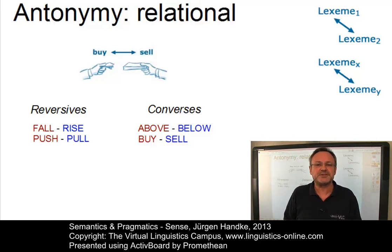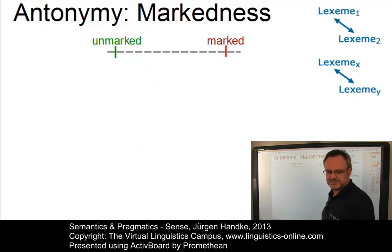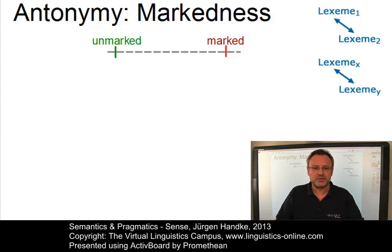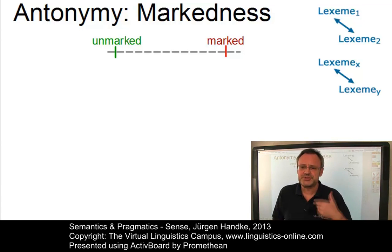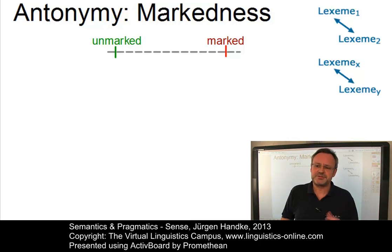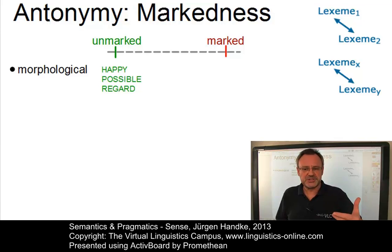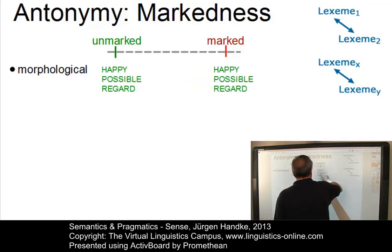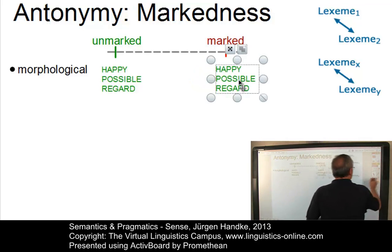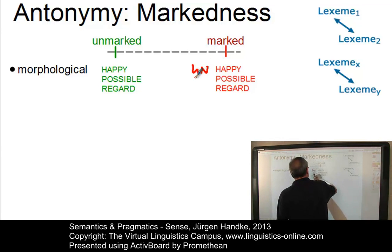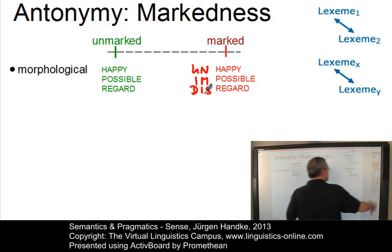An interesting concept related to antonymy is markedness. The members of antonym pairs are often distinguished with respect to their markedness, where one item — the marked term — is said to possess a special mark which the other, the unmarked or default term, does not have. We distinguish three major types of markedness. The first is morphological markedness, where one item in a pair of opposites carries a morphological mark the other lacks — typically a negative prefix. For example, adding a prefix such as un-, im-, or dis- creates marked terms like unhappy, impossible, or disregard.